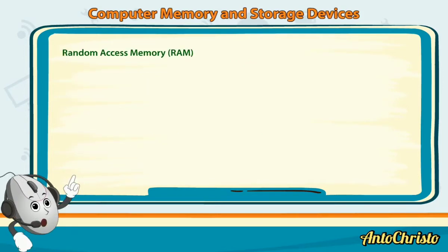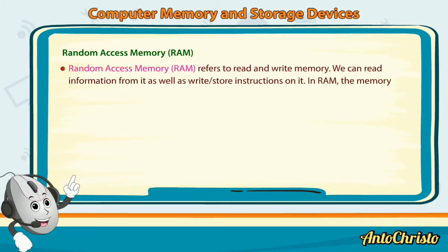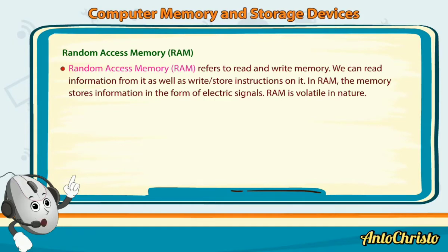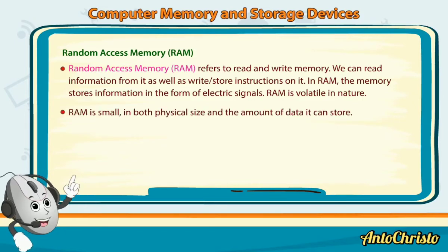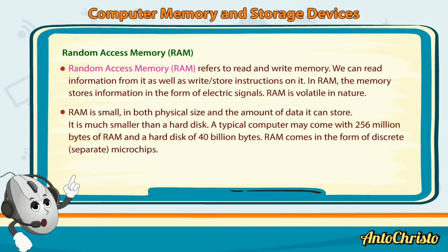Random Access Memory (RAM) refers to Read and Write Memory. We can read information from it as well as write and store instructions on it. In RAM, the memory stores information in the form of electric signals. RAM is volatile in nature and small in both physical size and the amount of data it can store. A typical computer may come with 256 million bytes of RAM and a hard disk of 40 billion bytes. RAM comes in the form of discrete, separate microchips.